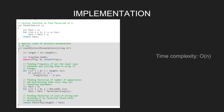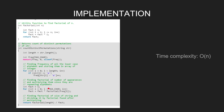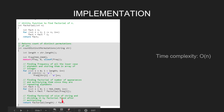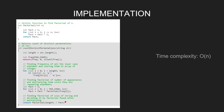We initialize 'fact' as 1. Then we update 'fact' as the multiplication of the factorials of the frequency of each character. Finally, we find the answer by dividing the factorial of the length of the string by 'fact'. This is the final answer.